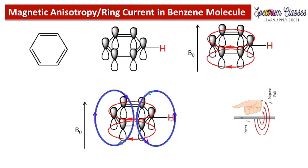Here we have a proton in the benzene ring, which is in the plane of the ring. The direction of the induced magnetic field at the proton's position is upward — the direction of B-naught is upward. This induced magnetic field augments the magnetic field experienced by the proton. So instead of experiencing only B-naught, the proton experiences B-naught plus the induced magnetic field, meaning it resonates at a higher frequency or higher chemical shift value.